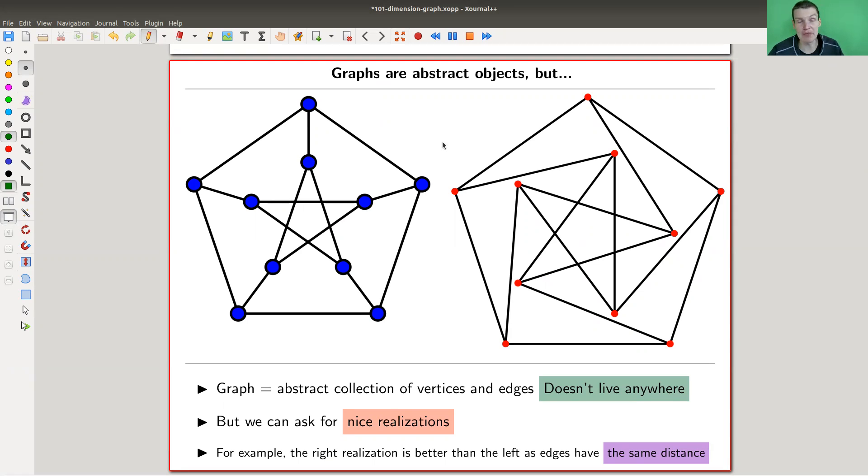So graphs are certainly abstract objects, it's simply a collection of vertices and edges, we just like to draw them all the time. But strictly speaking, it's just a collection of vertices and edges, and whatever you see here, they are the same graph, so one of them is just a little bit twisted towards the other. So they don't live anywhere, that's my whole point here. They don't have any home, it's just an abstract thing.